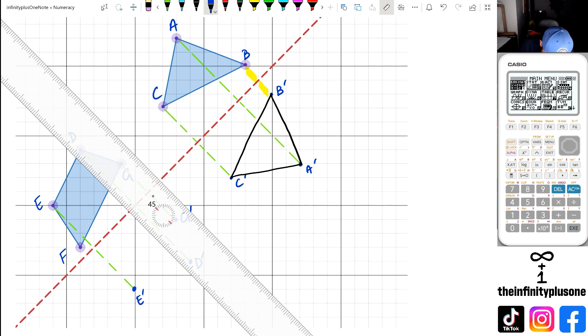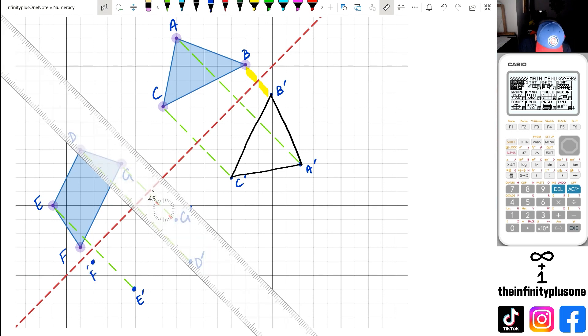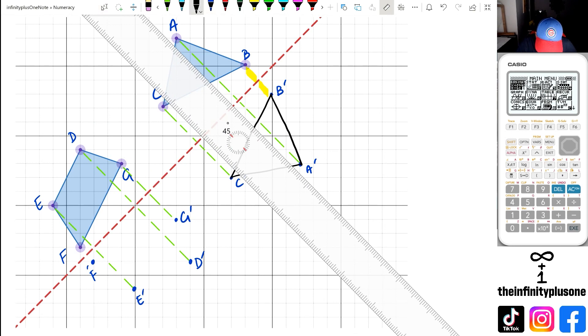Now F is kind of halfway across. So that's just going to be F dash right there. So once I get those four letters, I should be able to create my shape from that. And then F to E.